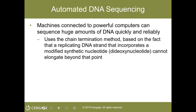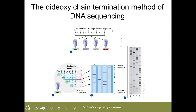With DNA sequencing, machines connected to powerful computers can sequence huge amounts of DNA quickly and reliably using the chain termination method, based on the fact that a replicating DNA strand incorporating a modified synthetic nucleotide cannot elongate beyond that point. DNA sequencing relied initially on the chain termination method, where radioactively labeled fragments from four different reaction mixtures — each with a different deoxynucleotide — are separated by high-resolution gel electrophoresis. Because high-resolution gel can separate DNA fragments differing by only a single nucleotide, a researcher can read off the sequence one base at a time.